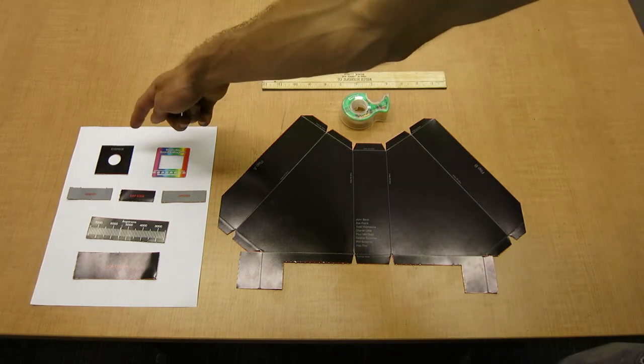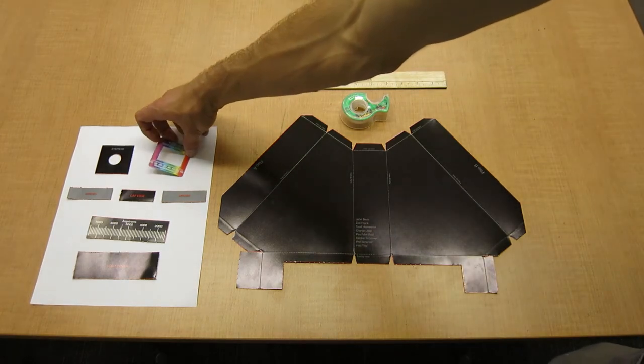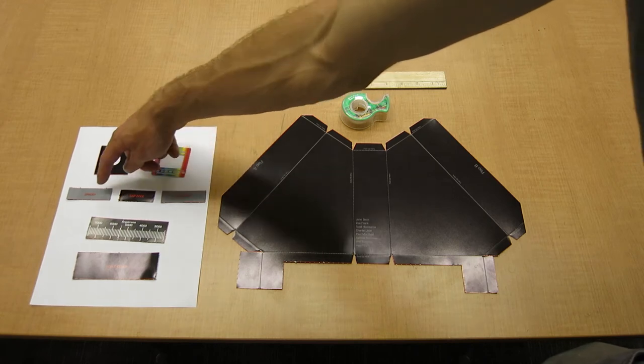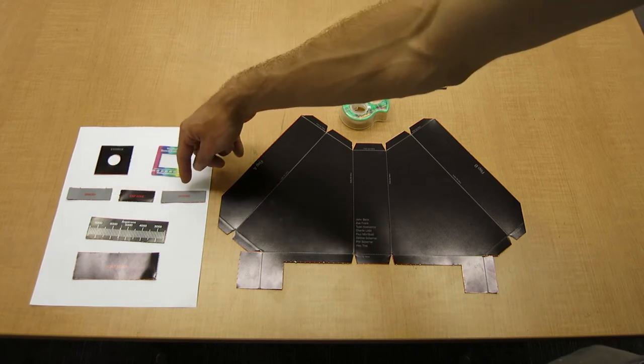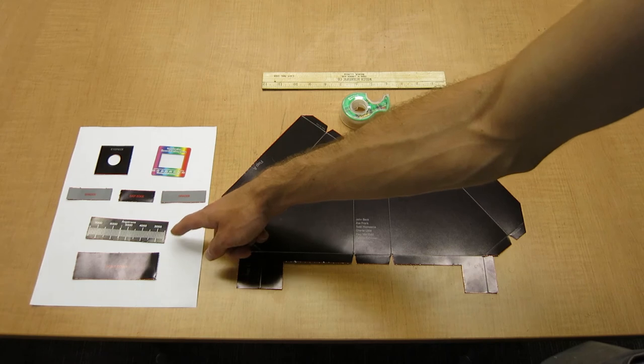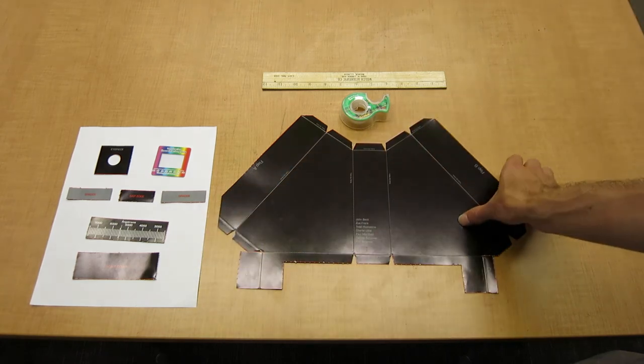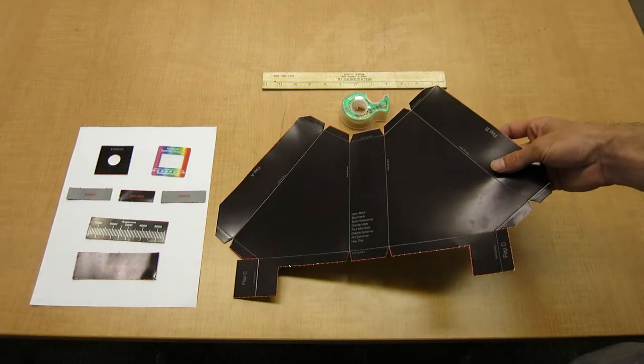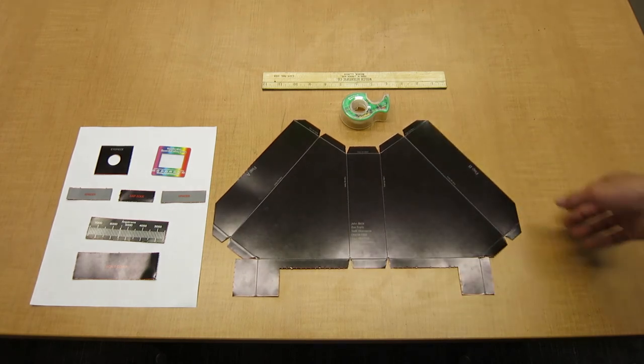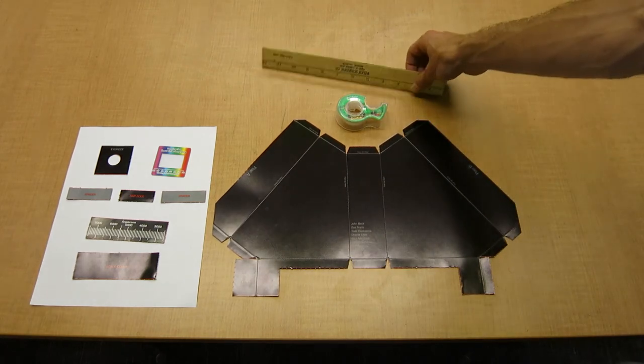Here is an eyepiece. This is the diffraction grating. Then you have a spacer, a gap edge, another spacer, a scale, and a scale cover, and the sheet for the body of the spectroscope. You'll also need some tape and a ruler for folding.